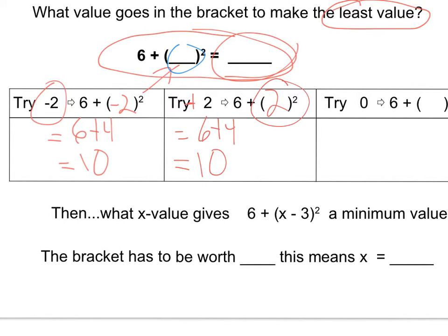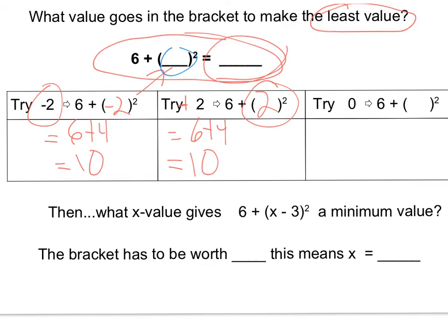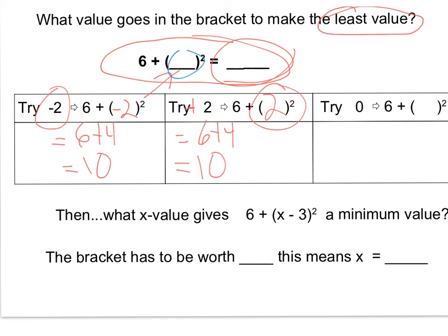So how do I get a minimum? Let's try 0. If I put 0 in the bracket, I have 6 plus 0 squared, which is just 6. So it seems that the value I have to put in this bracket to make this whole expression the lowest possible number is 0, because the least a square can ever be is 0.